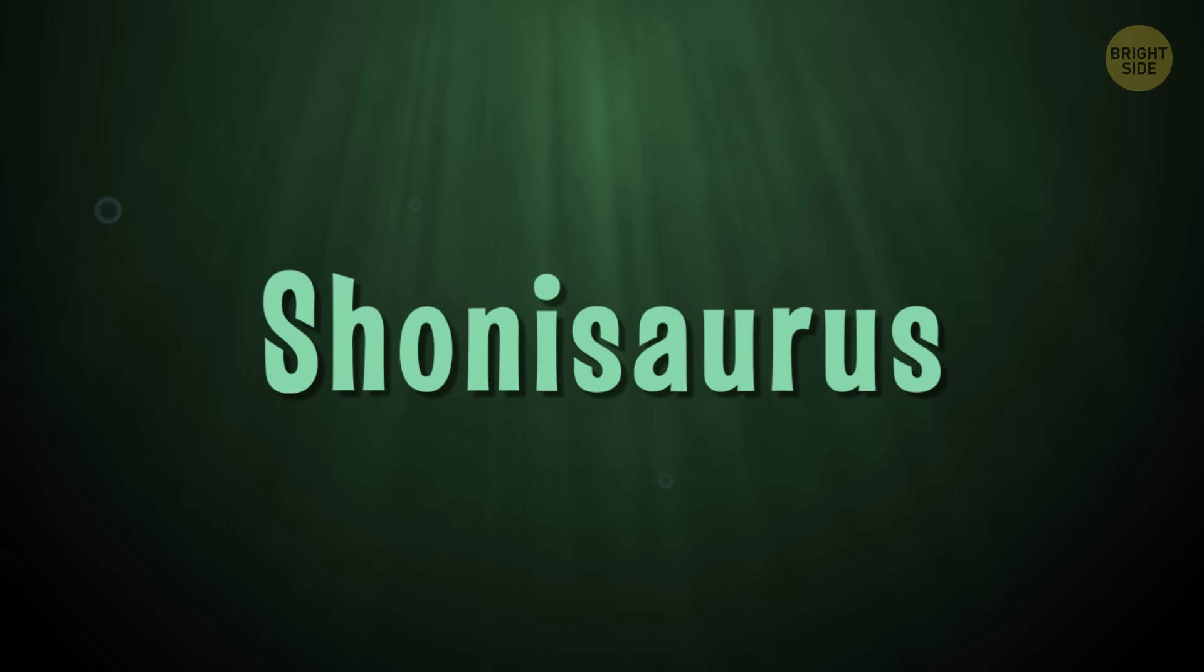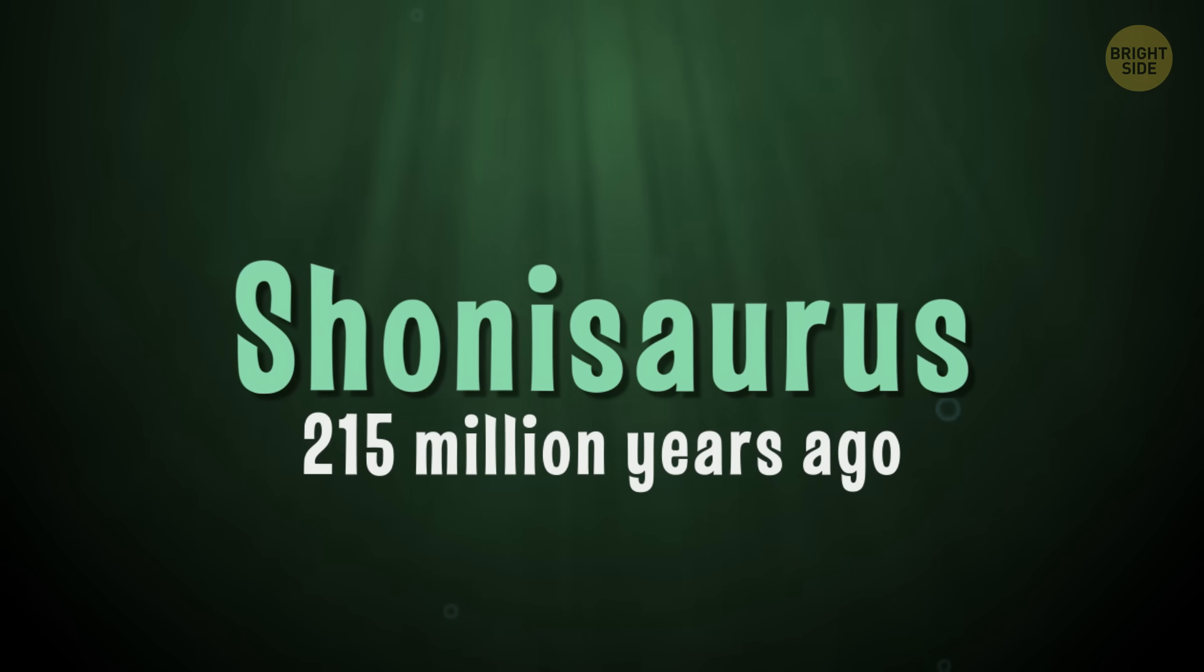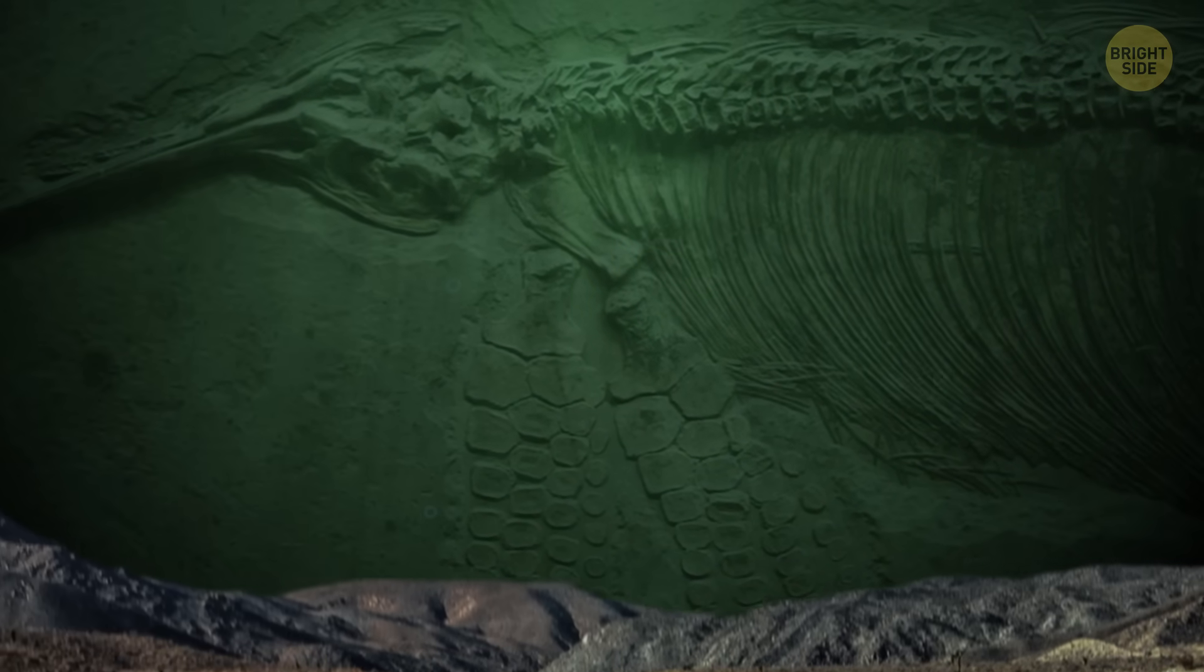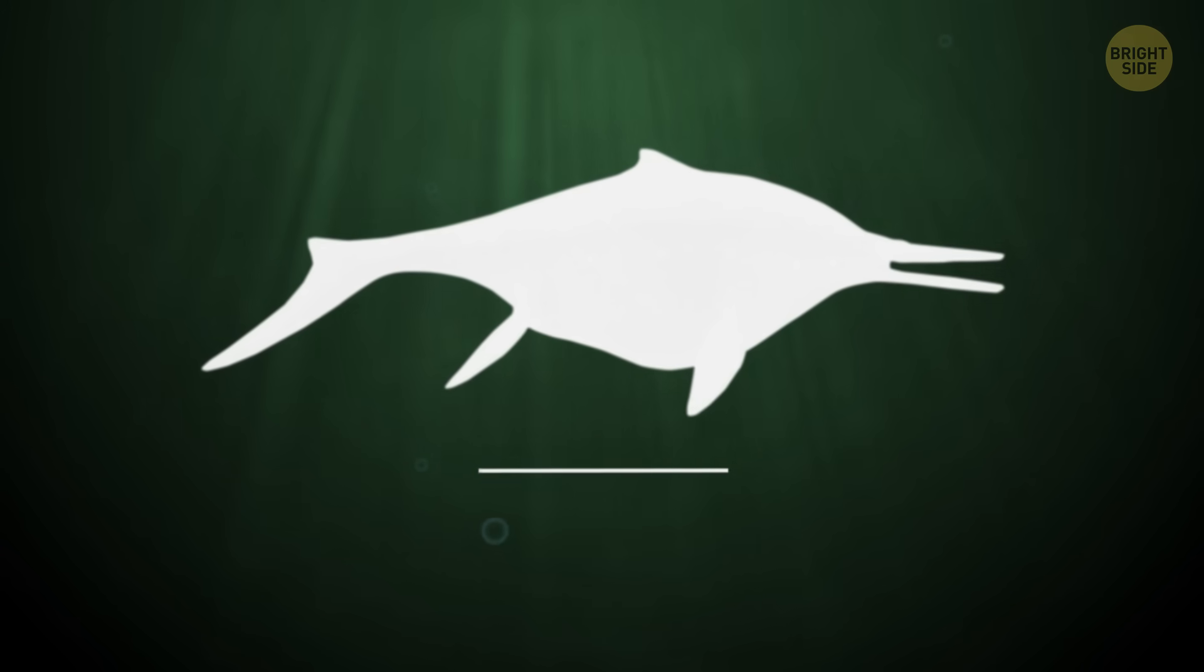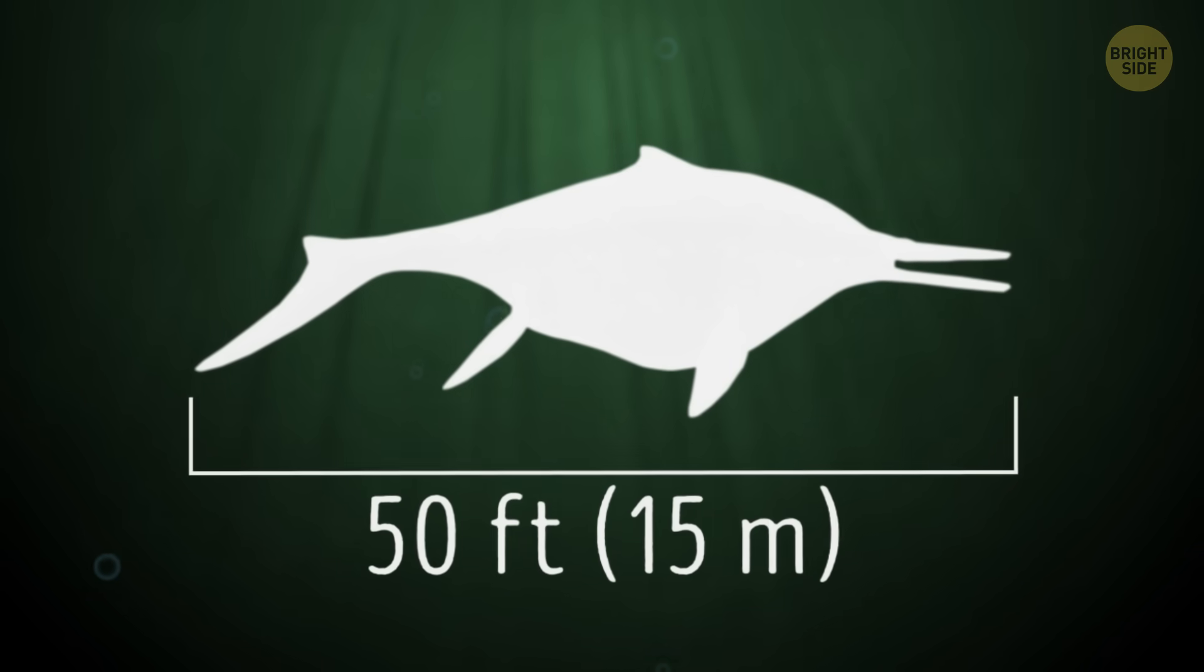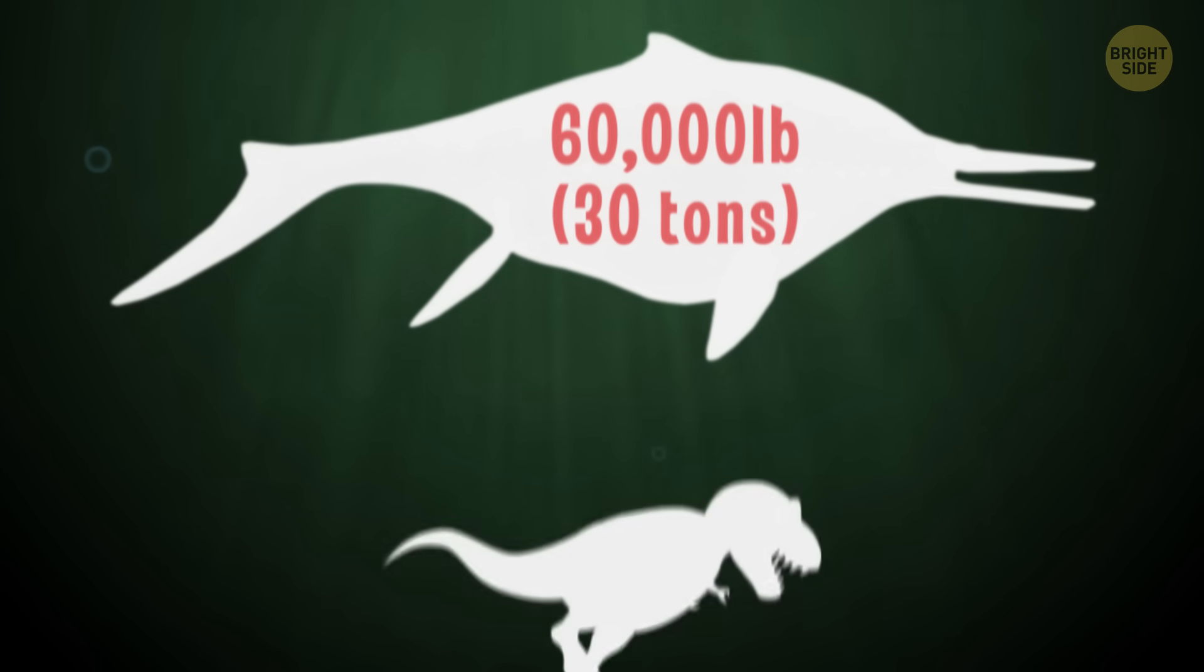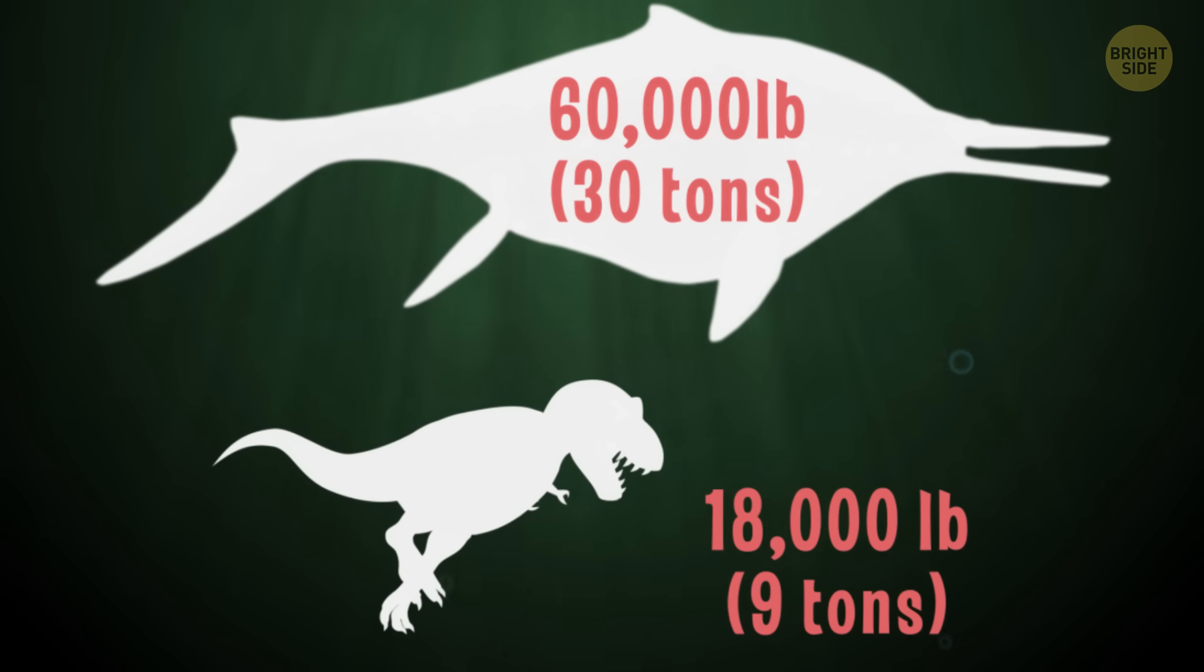Shonisaurus lived on Earth during the late Triassic period, about 215 million years ago. Shucks, just missed it. Archaeologists named them Shonisaurus thanks to the fossils they found near the Shoshone Mountains in Nevada. After studying their fossils, archaeologists believe these prehistoric reptiles grew to be about 50 feet long and weighed about 60,000 pounds. A T-Rex supposedly weighed around 18,000 pounds to give you a little perspective.